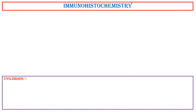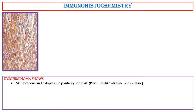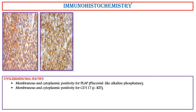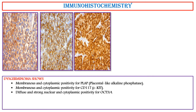Immunohistochemistry. This germinoma shows membranous and cytoplasmic positivity for PLAP (placental-like alkaline phosphatase), membranous and cytoplasmic positivity for CD117 (c-kit), and diffuse and strong nuclear and cytoplasmic positivity for OCT3/4.